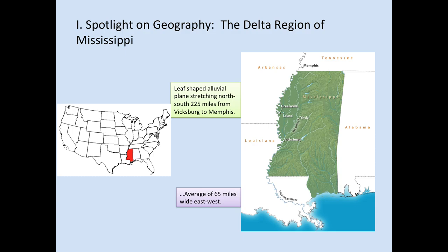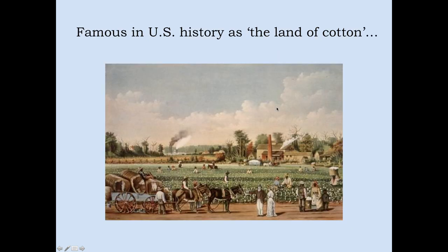It averages about 65 miles wide east to west. In geological terms, this Delta region is a lowlands region, which typically through time would see it as one of the flood plains of the Mississippi River as the river neared its mouth in the Gulf of Mexico. The Delta is famous in U.S. history as the Land of Cotton, Dixie — the place where slave-owning, property-owning, cotton-producing interests made great fortunes in the decades before the Civil War.